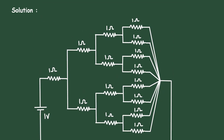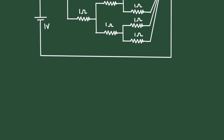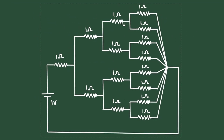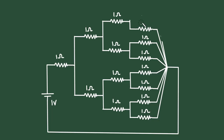Here we can see this 1 ohm and this 1 ohm are connected in parallel, and these pairs are also connected in parallel. When two resistances of the same value are connected in parallel, their equivalent resistance will be half. So the equivalent resistance of each pair will be 0.5 ohm. Let us make a single resistor of 0.5 ohm — that is half of this 1 ohm.